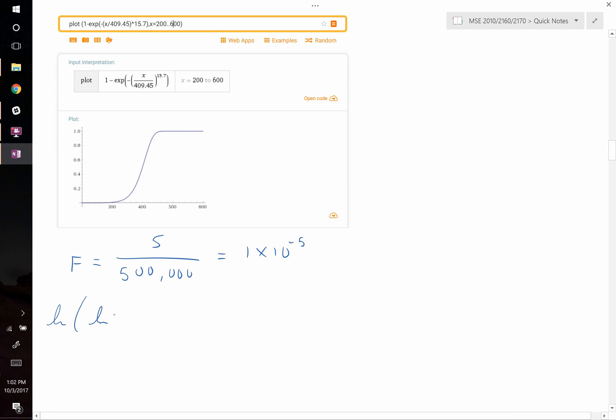That's equal to 1 times 10 to the negative 5th. So let's do this again. Natural log of natural log of 1 over the quantity of 1 minus 1 times 10 to the negative 5th. That's equal to 15.7 multiplied by the natural log of the failure stress, which we're going to solve for, minus 15.7 times the natural log of the characteristic strength that we just determined, which is 409.45.